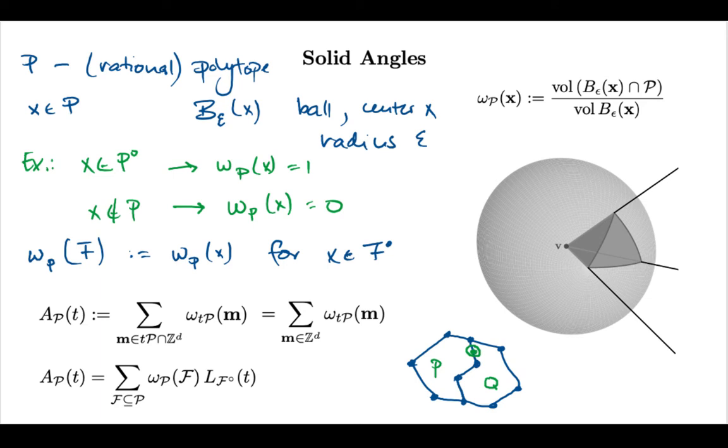So you see this in the last line over here. The solid angle counting function can be expressed as a sum over the Ehrhart quasi-polynomial of the interiors of the faces. And then I have to weigh each one of those quasi-polynomials by the solid angle of the face.